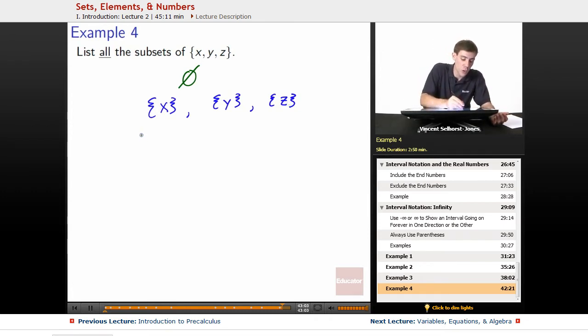Now we can go with the two element ones, and we can say, all right, well, x, y, that's going to be a subset. What about x, z? And then finally, y, z.